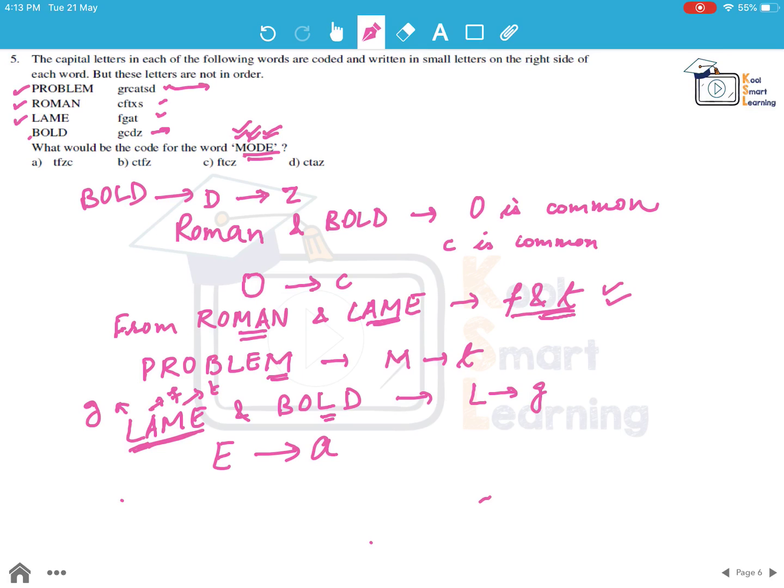So now for mode we get the code of all the four alphabets. So we can say the code should have Z, C, T and A. So the only option which fulfills this criteria is D. So D is the answer in this case.